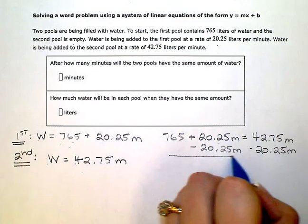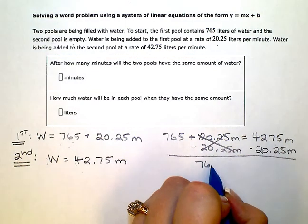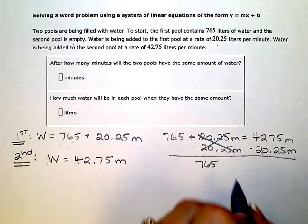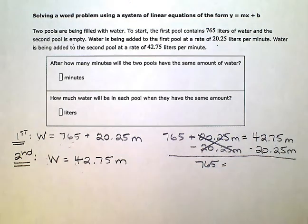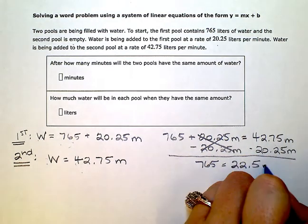And then when I simplify, I'm left with 765 on the left equal to 42.75 minus 20.25 on the right, which gives me 22.5m on the right.